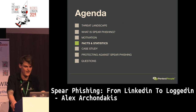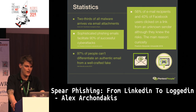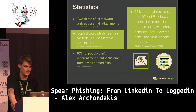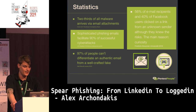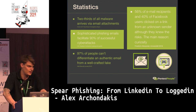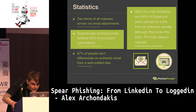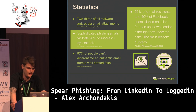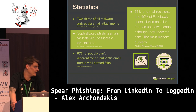Some fairly scary facts and statistics: two thirds of all malware arrives via email attachments; sophisticated phishing emails facilitate 90% of successful attacks; 97% of people cannot differentiate an authentic email from a well-crafted fake one. This last statistic is the most important — if you write things in good English and it looks genuine, people are probably going to click on it. 56% of email recipients and 40% of Facebook users clicked on a link from an unknown sender purely out of curiosity.